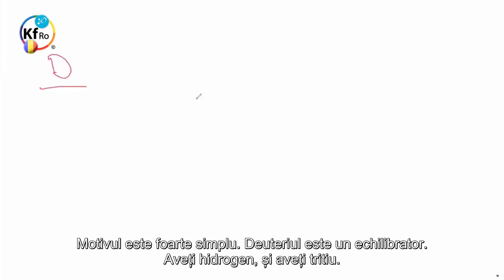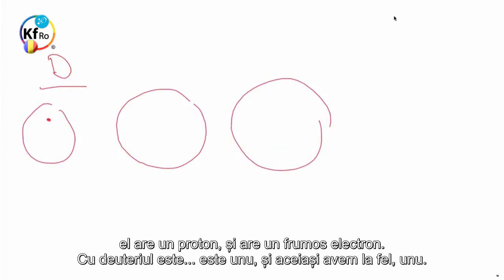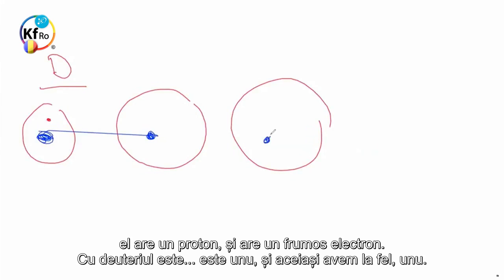The reason for it is very simple. Deuterium is a balancer. You have a Hydrogen and you have Tritium. For those of you who don't know the difference with what we call common Hydrogen, it has one Proton and it has one beautiful Electron. With the Deuterium, it's one. And here we have the same one. Here we have the same one Electron, and we have one Electron. With Tritium, we have one Neutron. With Tritium, we have two of them.